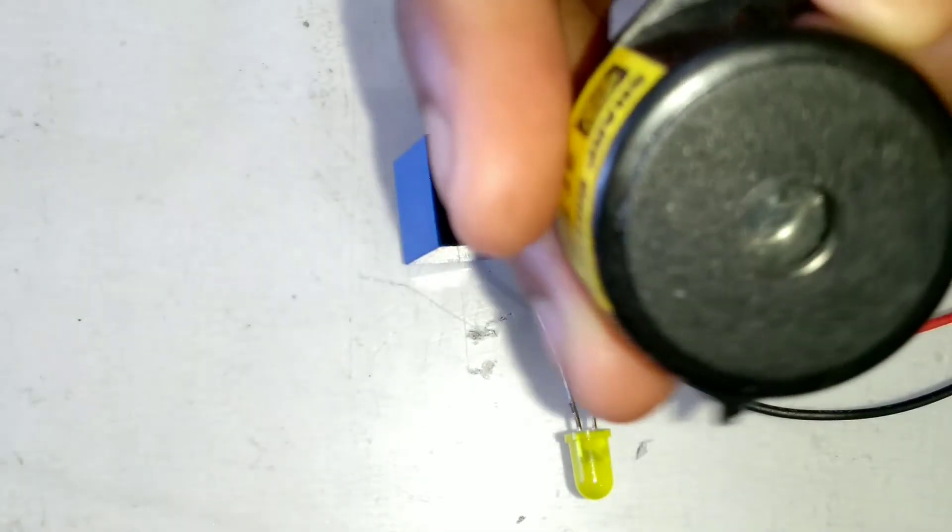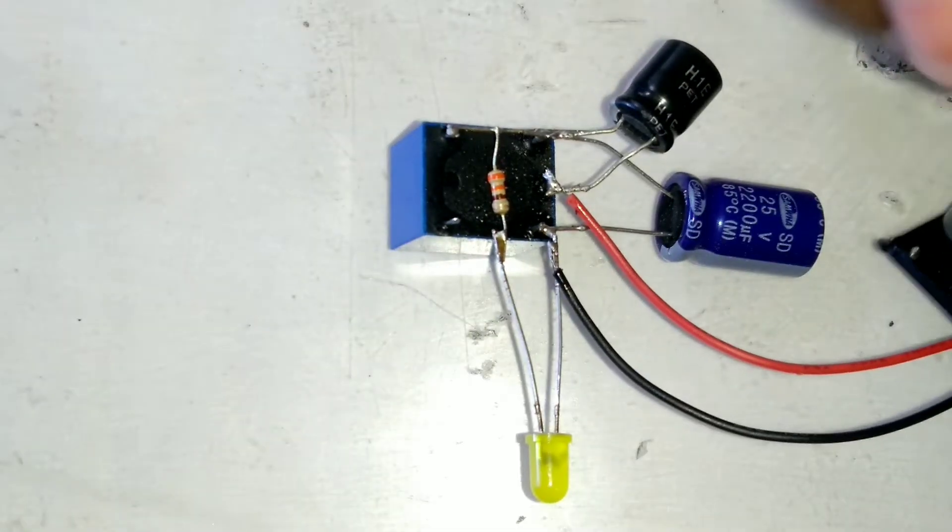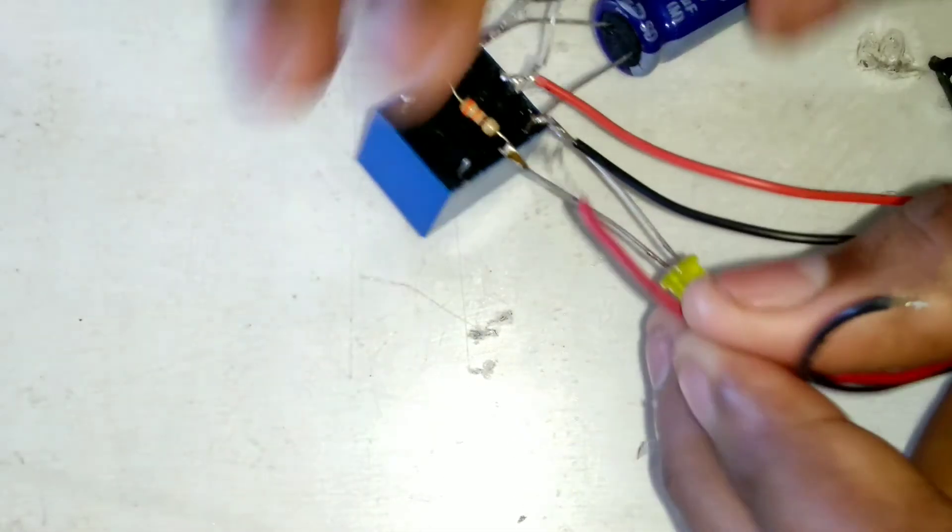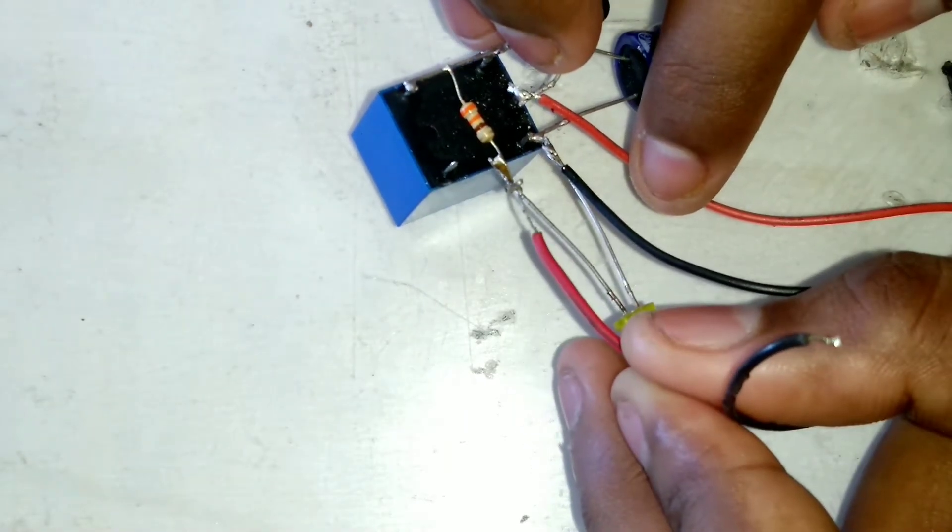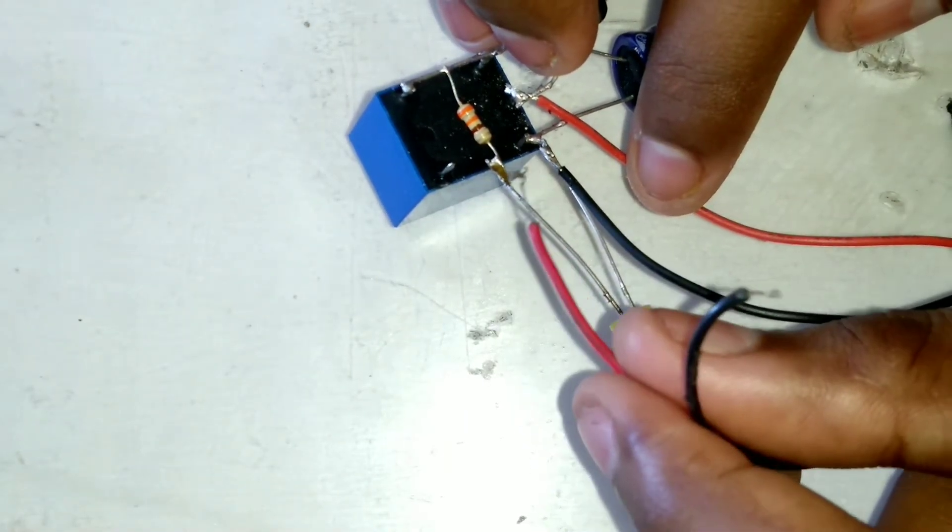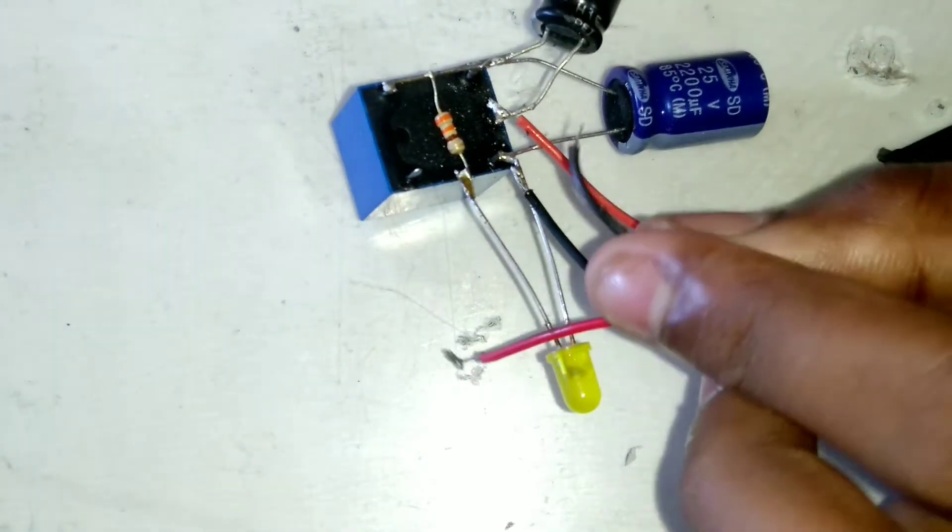We have 5 volts and positive. For positive, we connect the resistor to the LED, and for negative, we connect to Coil Number 2.